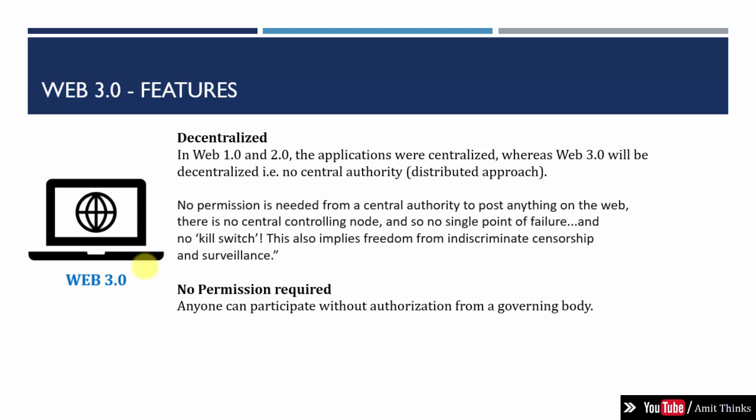Another feature is decentralization. In Web 1.0 and 2.0, from 1989 to 2004 and 2004 till now, applications were centralized. Web 3.0 will be decentralized — there won't be any central authority. This is debatable in terms of security, since going without any central authority could introduce insecure approaches. The official lines are: no permission is needed from a central authority to post anything on the web, no single point of failure, no kill switch. This also means freedom from censorship and surveillance. No permission is required from a governing body to access Web 3.0.